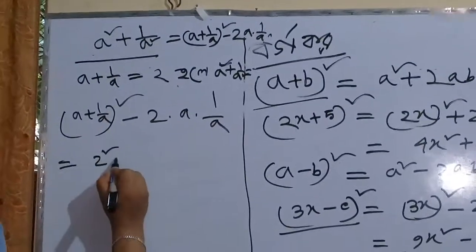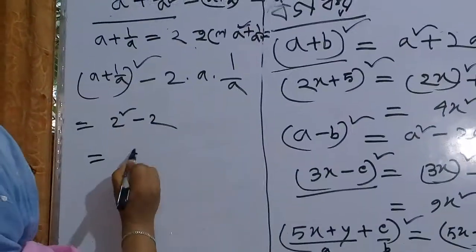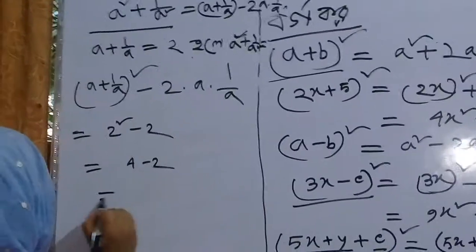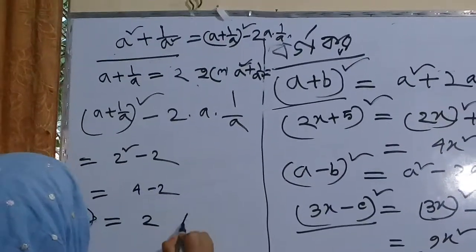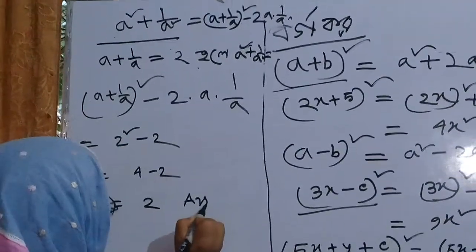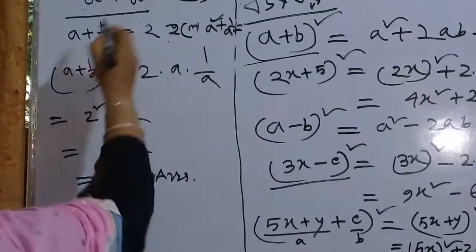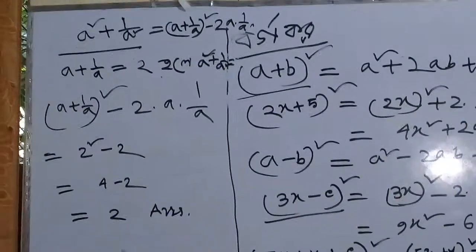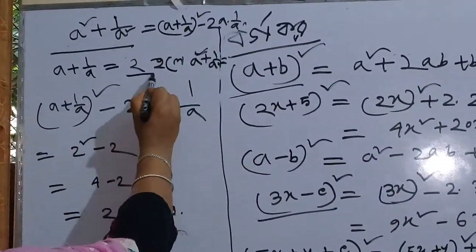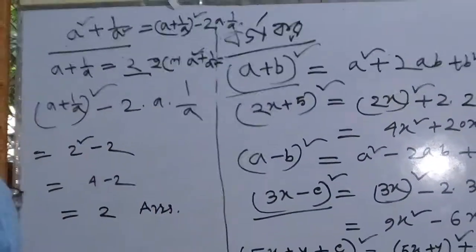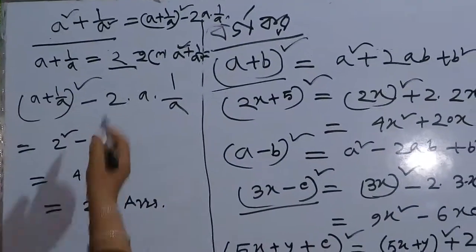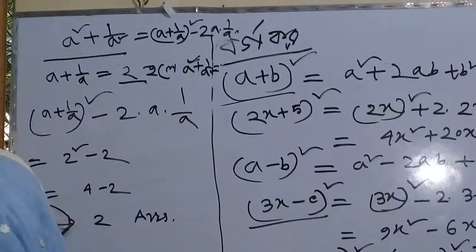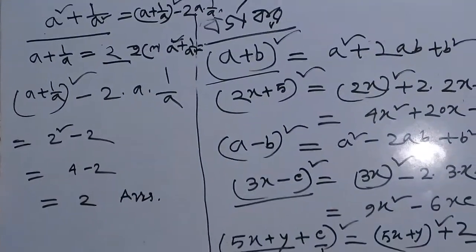A squared minus 2, 4 minus 2, that's the answer. Now, if you have 3, 4, 5, you can get the calculation.